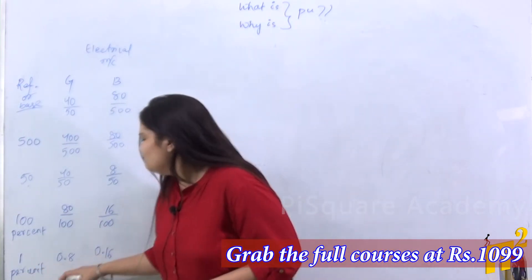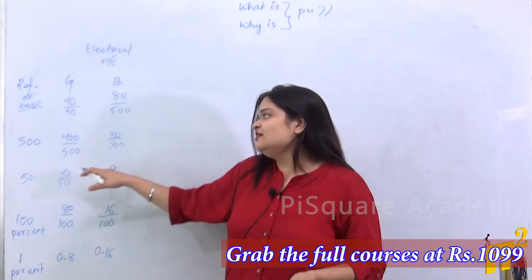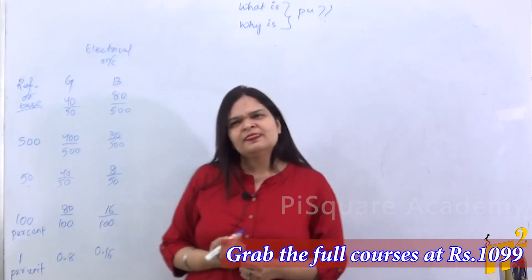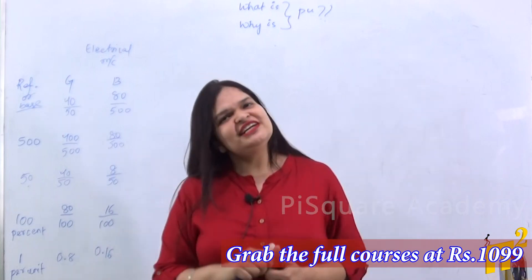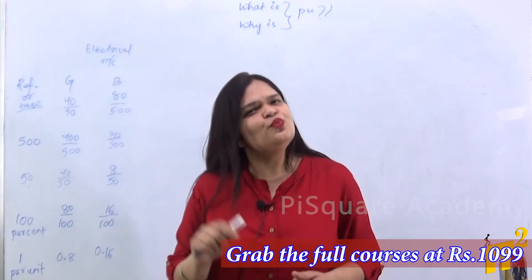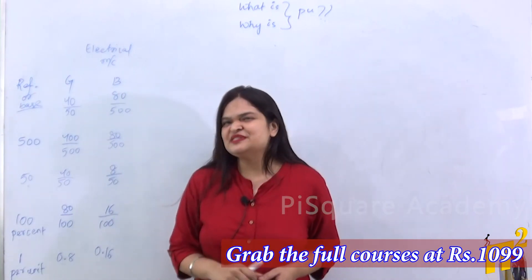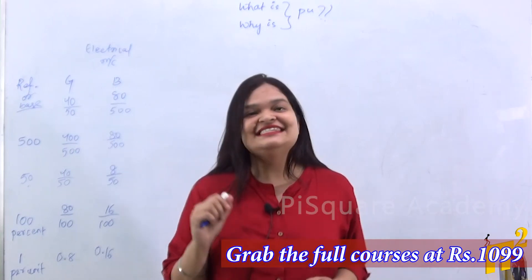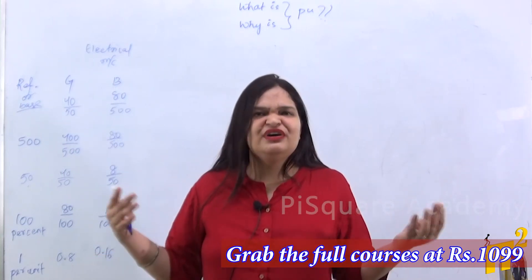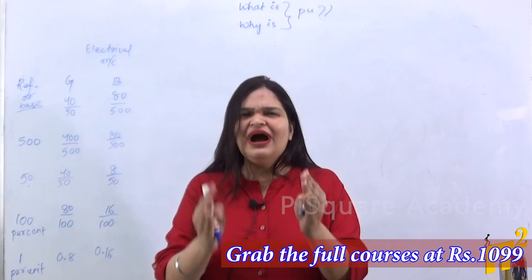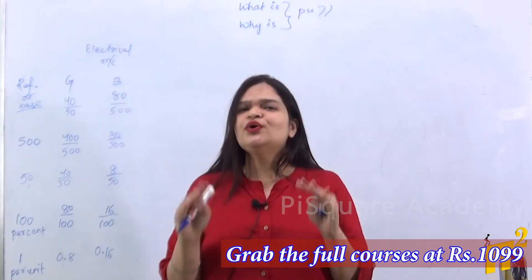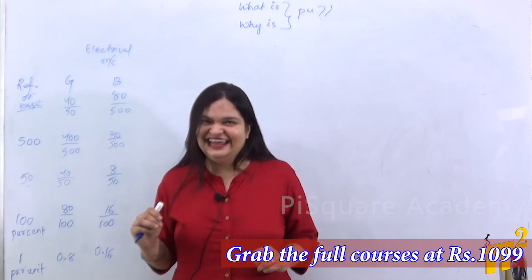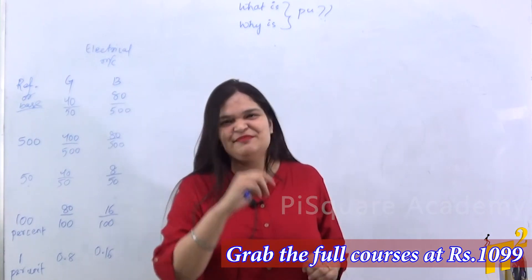Now we can easily compare which one is a better performer. The next question is: why in case of power systems do we take only per unit instead of percent or per 20 or per 50? Why do we consider only per unit? For that, you have to watch the video till the end.